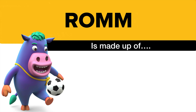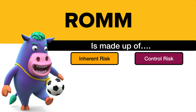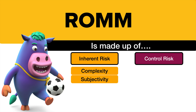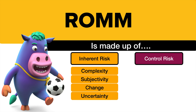A question you might get at the planning stage in question one is: what are the risks of material misstatement? What are the risks that you get something wrong, that the client gets something wrong and that's happening in the accounts? Well, it all depends on the inherent risk of the item in the accounts and what controls there are. Inherent risk is basically how complex the area is, how subjective it is, has it been subjected to change, is there a lot of uncertainty, and is it susceptible to bias, fraud, or error.